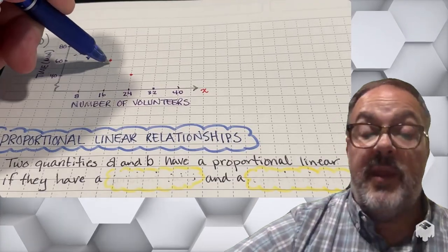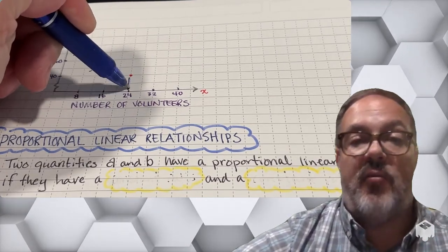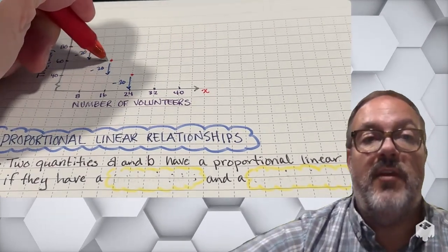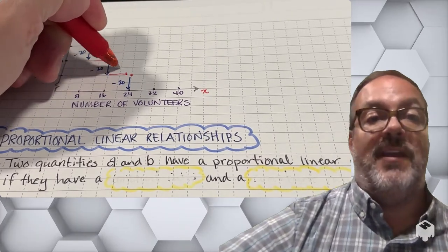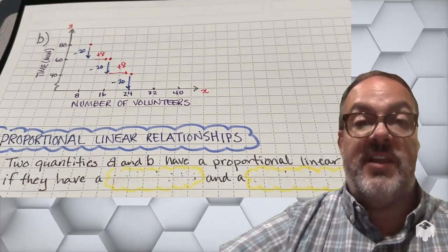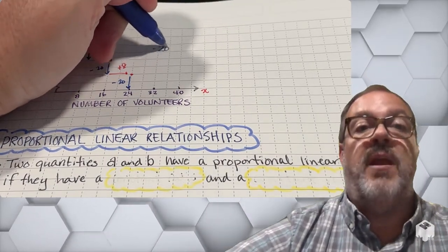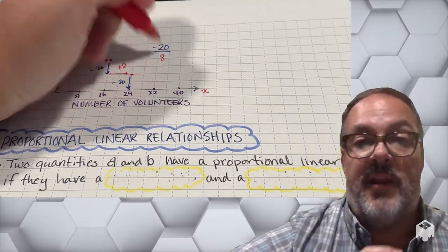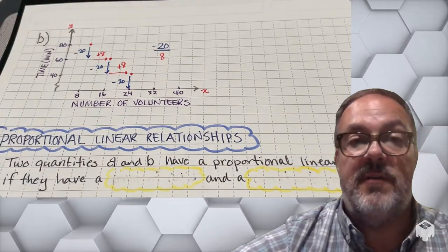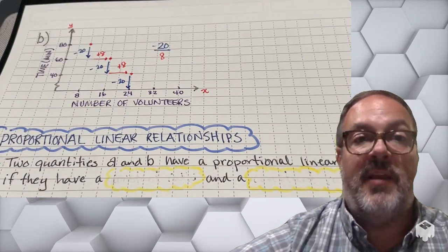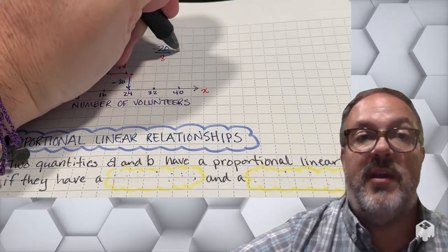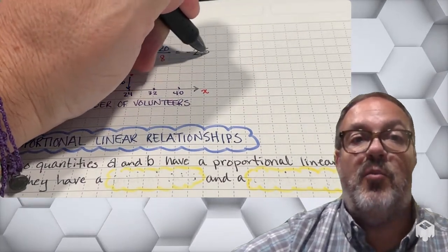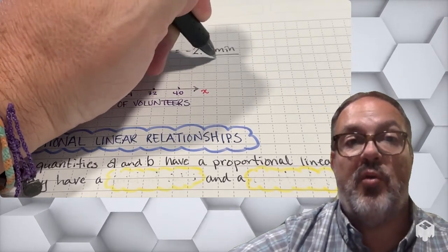In problem b, instead of a table I have a graph, and I can see that as the points go down to the right, it's decreasing by 20 minutes each time while the number of volunteers is increasing by eight. As a rate of change, that's the ratio of negative 20 over 8, and if I simplify that I get negative 2.5 minutes per volunteer.